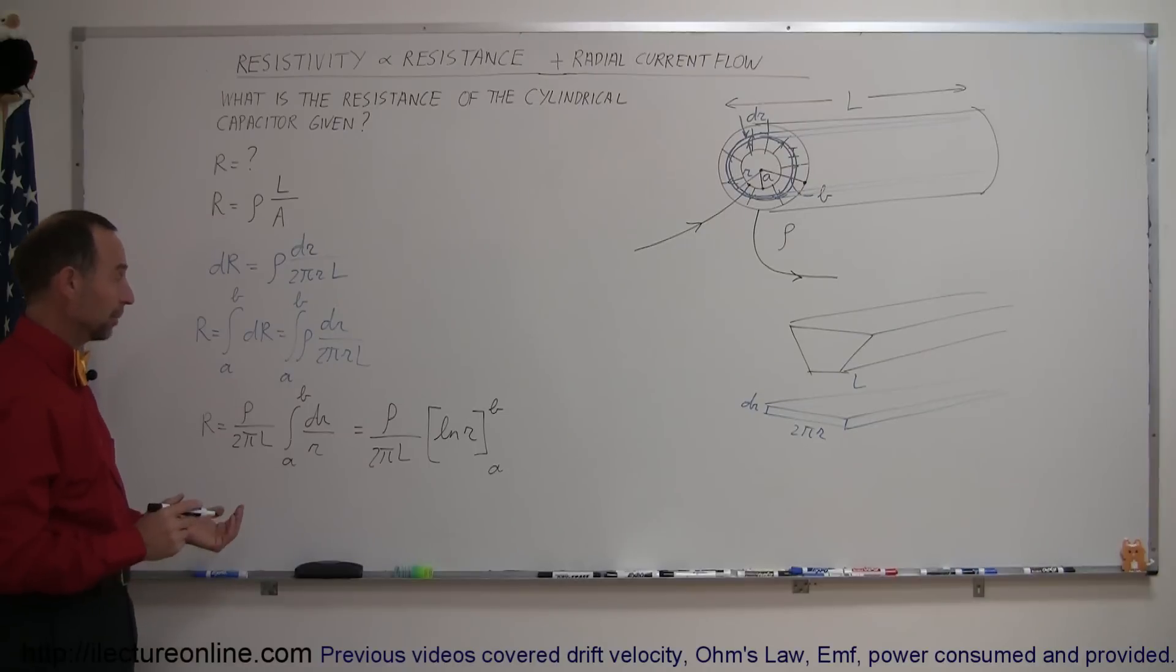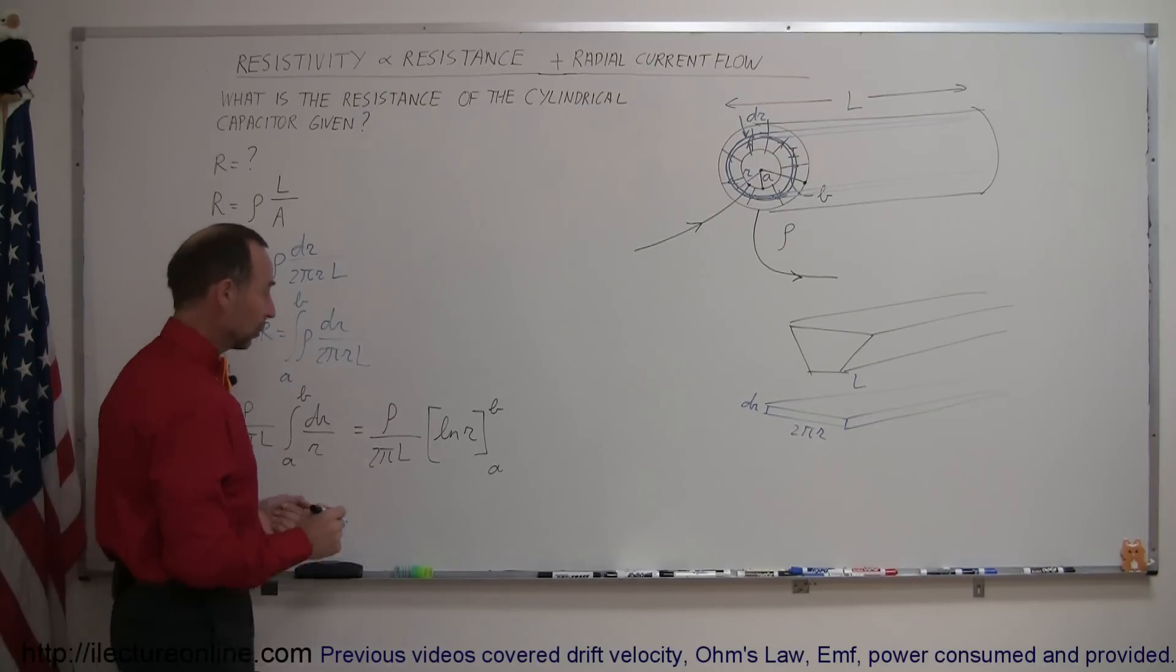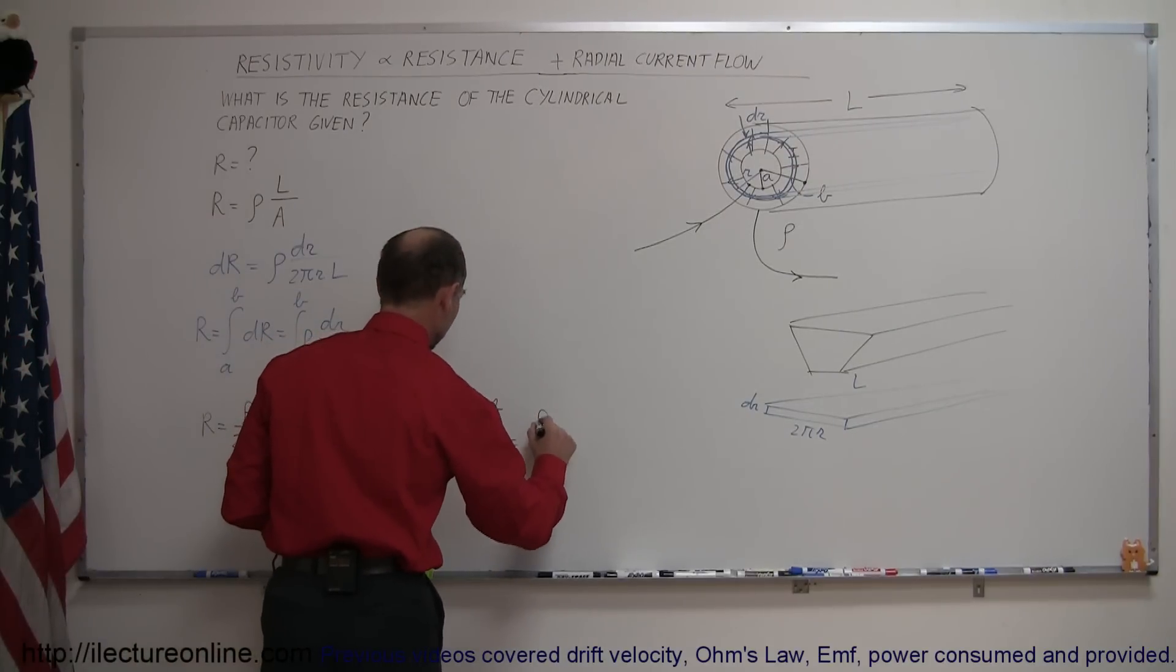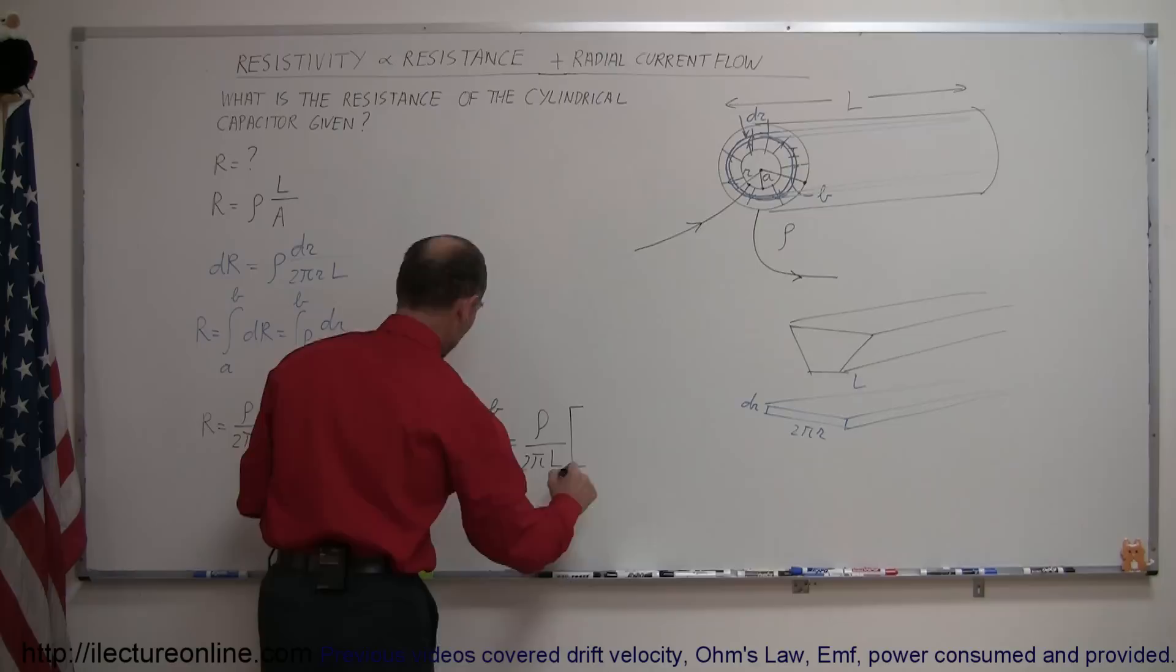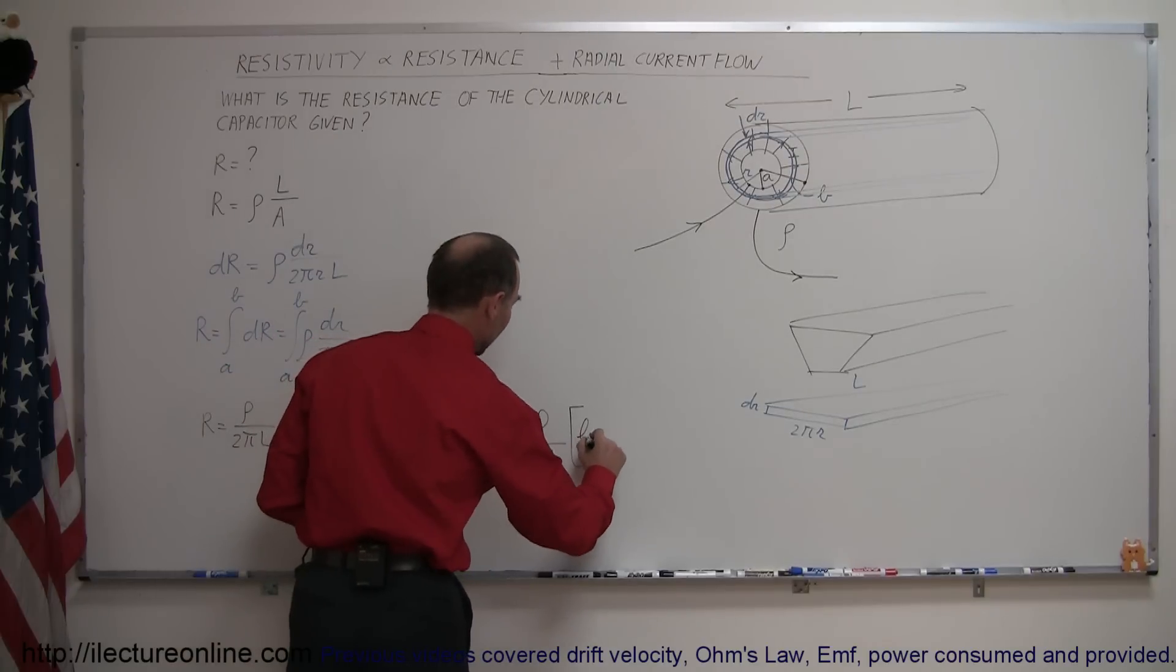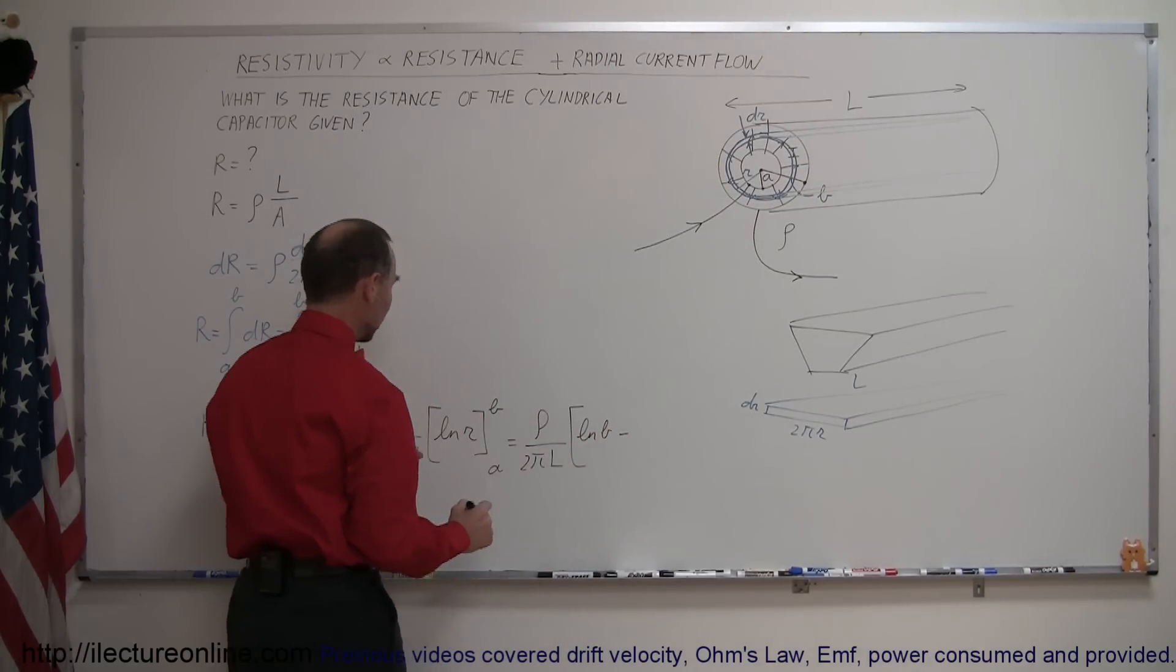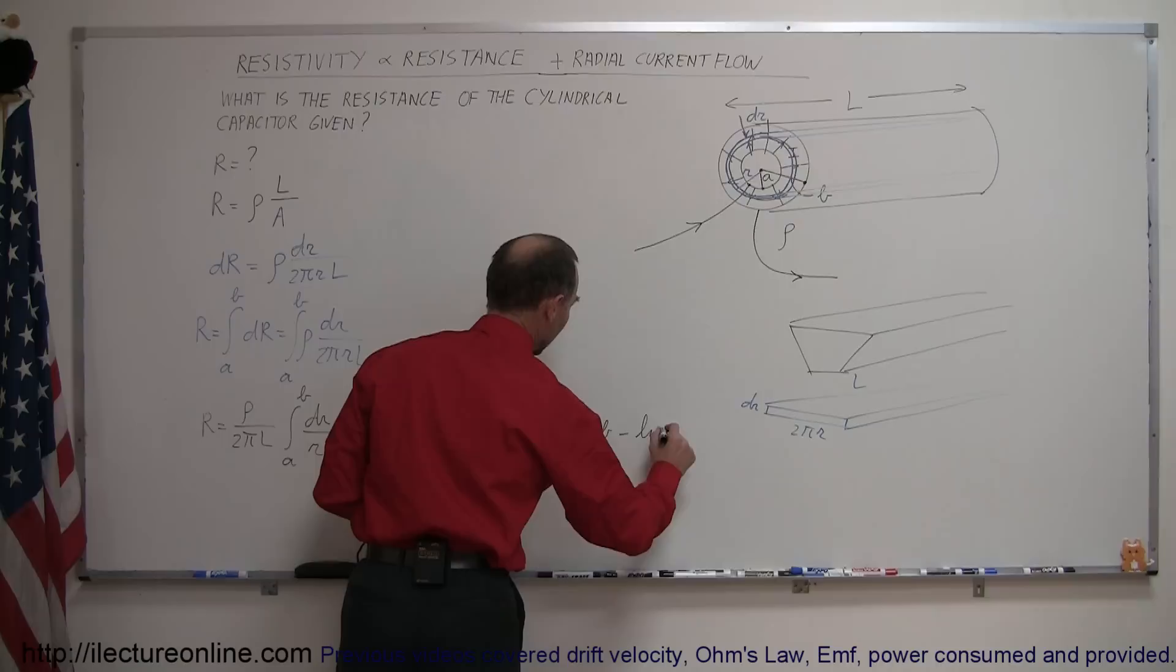Of course then we plug in the upper limit and subtract when we plug in the lower limit, so this is equal to the resistivity divided by 2 pi L times, when we plug in the upper limit we get the natural log of B, minus when we plug in the lower limit we get the natural log of A.